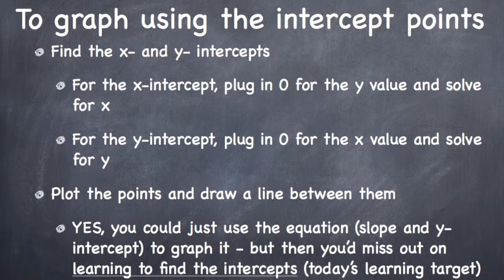So to graph using intercept points, the first thing you're going to want to do is find the x-intercept. To do that, plug in 0 for the y value and solve for x. Then you're going to want to find the y-intercept, so plug in 0 for the x value and solve for y. From there, just plot the points, draw your line, and then use either rise over run or your slope formula to find your slope so that you can plug it in and create your slope intercept form equation.